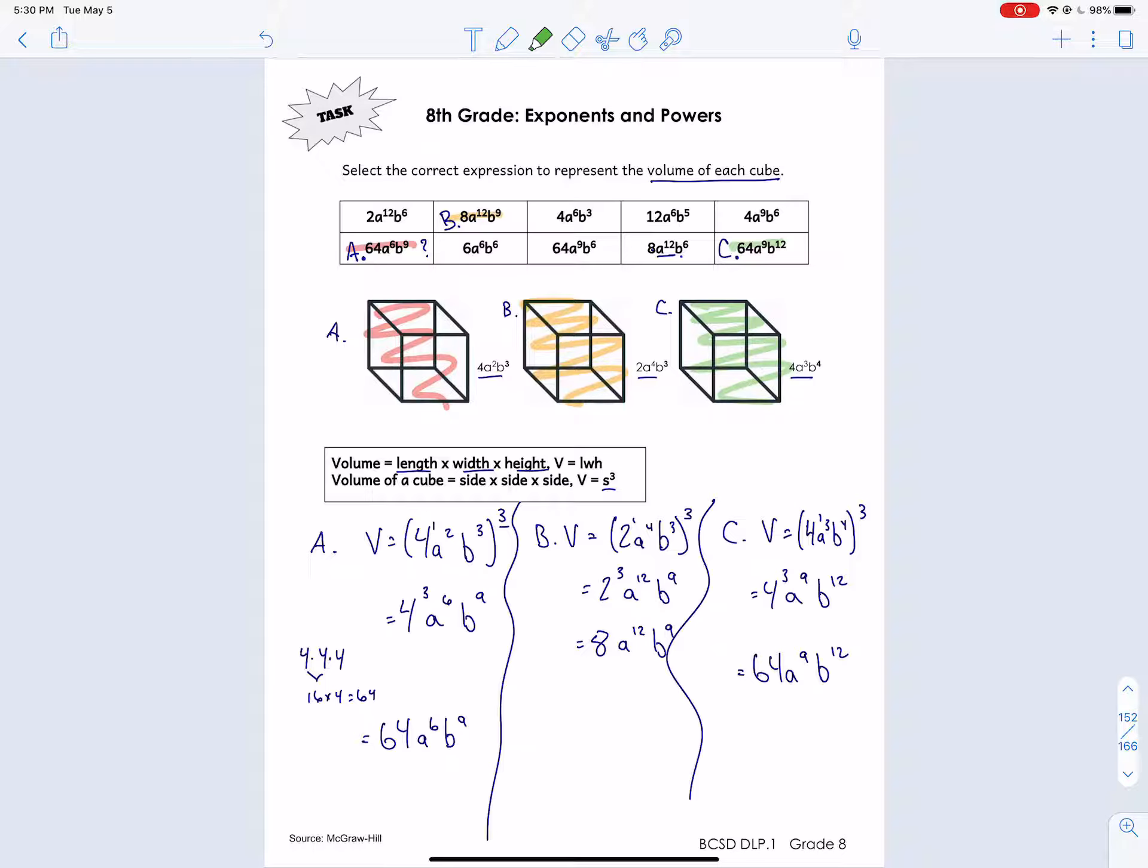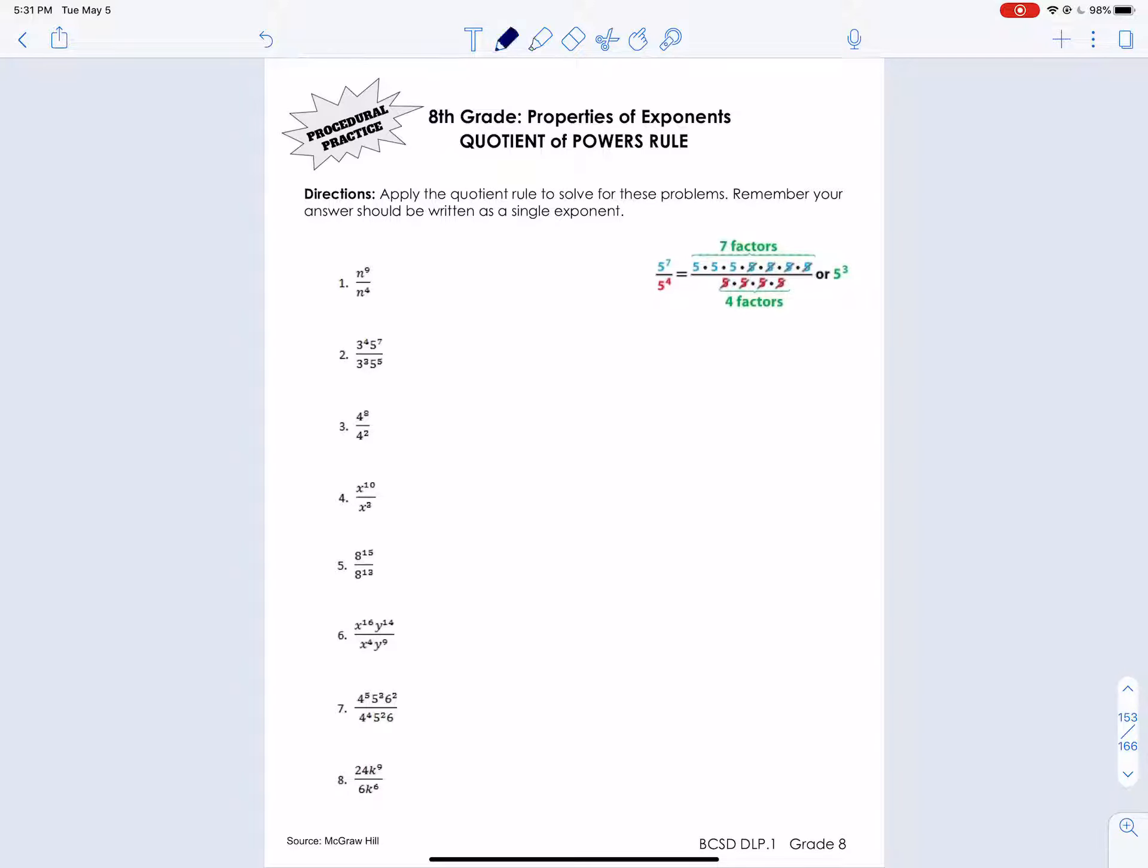Okay, and that's it. Again, if we were given the values of A and B, then we could actually come up with cubic inches or cubic yards or whatever the units are, cubic meters. But we don't, so we're going to leave it as this. All right, so the next thing is, again, just practicing exponents.